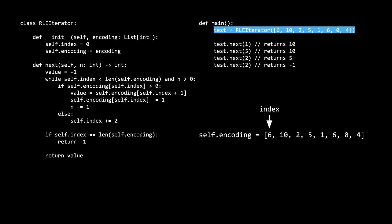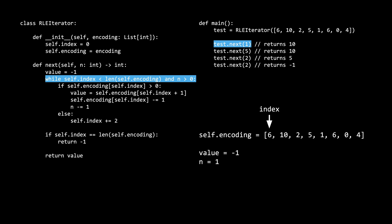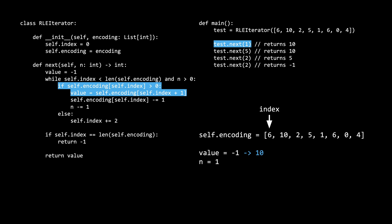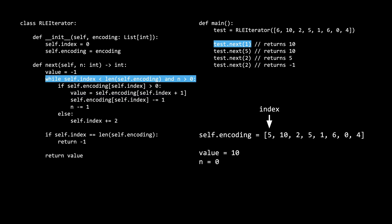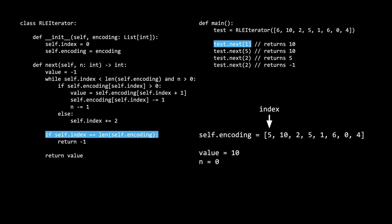In our main method, when we initialize the iterator, we have 0 as the index and the encoding is the array that is passed in. When we make our first call to next, we start off with a value of negative 1 and check the while loop condition. Both conditions pass, so we enter the while loop body. Since self.encoding of self.index is 6, which is greater than 0, we enter the if statement and set the value to index plus 1, then decrement n and self.encoding of self.index by 1. Now the second part of the while condition — n is greater than 0 — is false, so we exit the while loop, skip the if statement body, and return the value, which is 10.